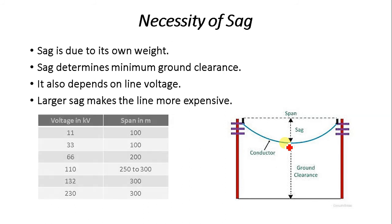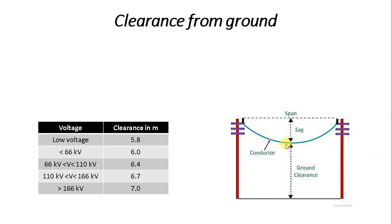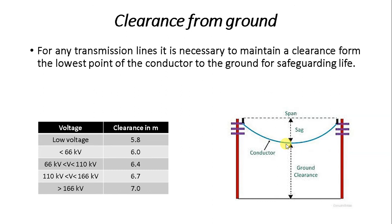The table shown here is about span values. Sag also depends upon the value of span — if the span is less, the sag is small. For ground clearance, it is necessary to maintain a minimum clearance from the lowest point of the conductor to the ground to safeguard life — whether human beings or animals. The clearance depends upon the voltage level of the transmission line. As shown in the table, for low voltage it is 5.8 meters and for greater than 166 kV it is 7 meters — these are minimum values.